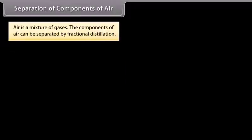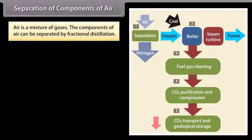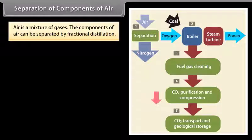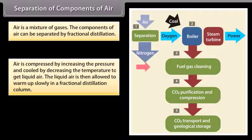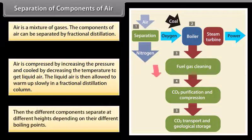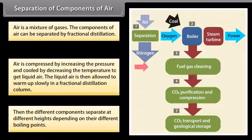Separation of components of air. Air is a mixture of gases. The components of air can be separated by fractional distillation. Air is compressed by increasing the pressure and cooled by decreasing the temperature to get liquid air. The liquid air is then allowed to warm up slowly in a fractional distillation column. Then the different components separate at different heights depending on their different boiling points.